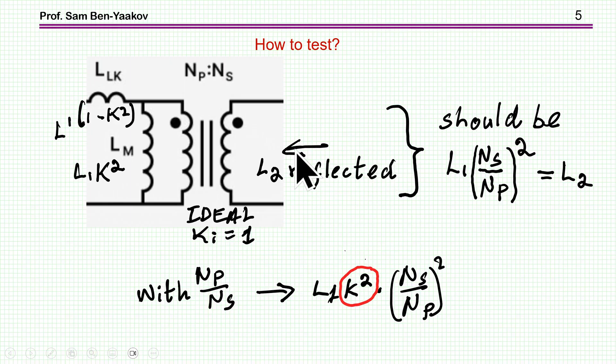You should get, when you look here into the secondary, you should see here the value of L2. So the value you should see will be L1, which is the total inductance here, times n². And now I'm looking at from the secondary, so the number of turns of the secondary divided by the number of turns of the primary squared. And this would be L2.